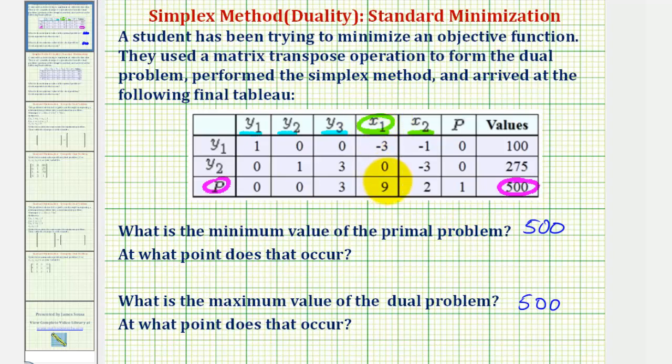So x sub one equals nine, and x sub two equals two. The point at which the minimum value occurs for the primal problem would be x sub one, x sub two, or in this case, (9, 2).